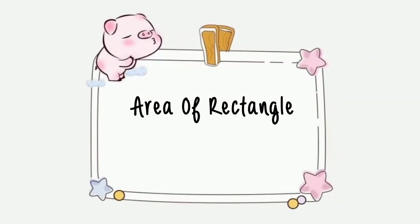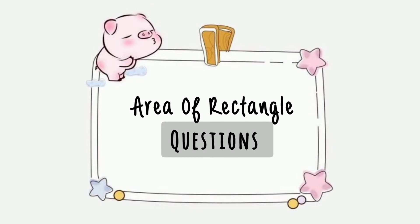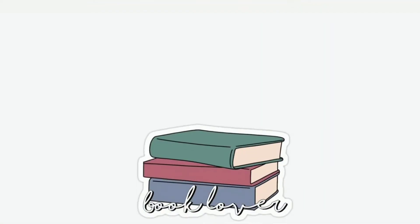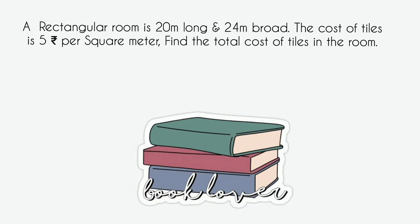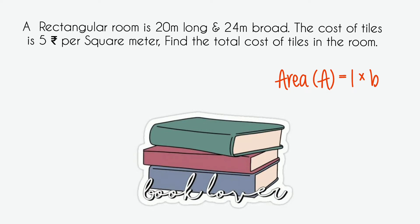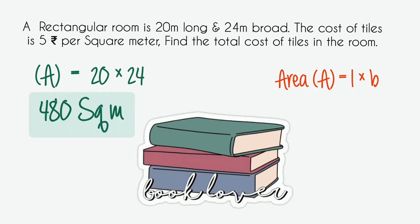Now we will see questions related to the area of a rectangle. The first question says: a rectangular room is 20 meters long and 24 meters broad; the cost of tiles is 5 rupees per square meter; find the total cost of tiles in the room. The length and breadth are given, so we put the values into the formula — length into breadth — that is 20 into 24.